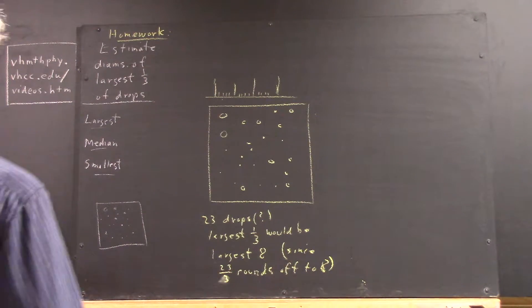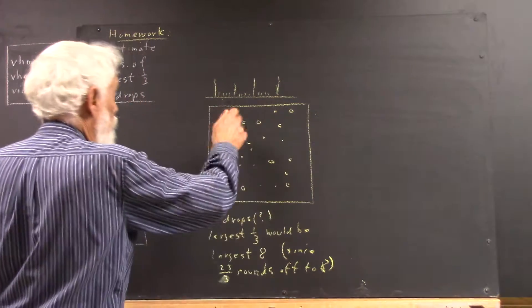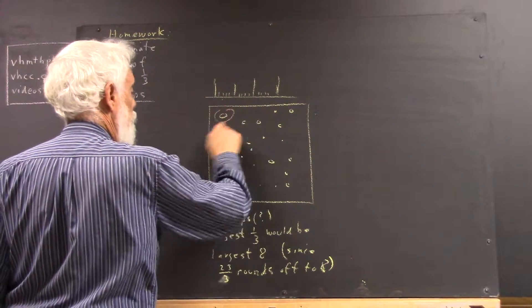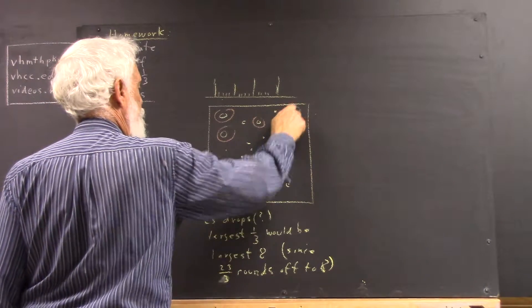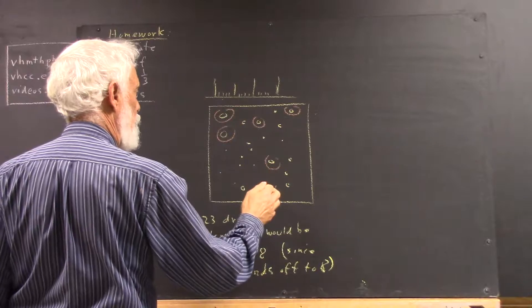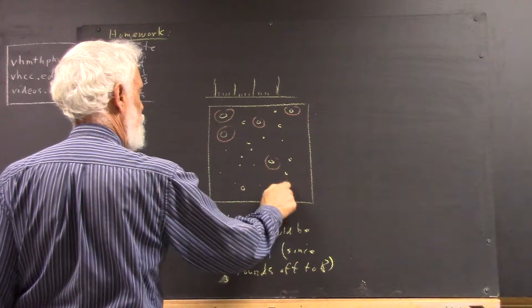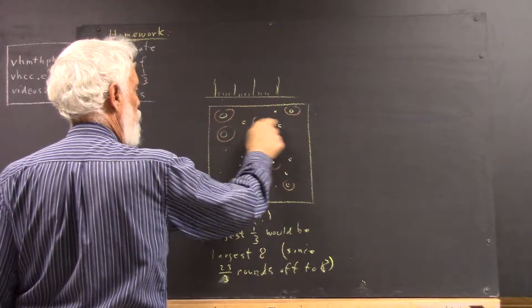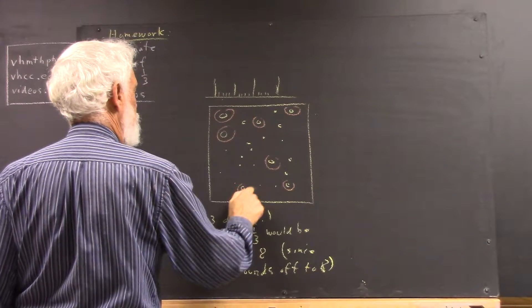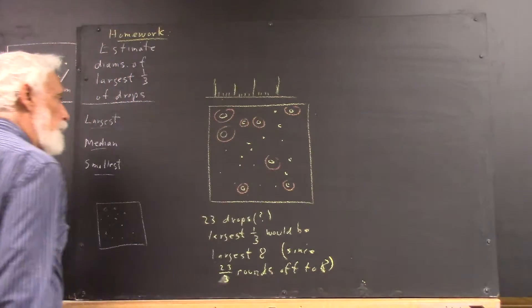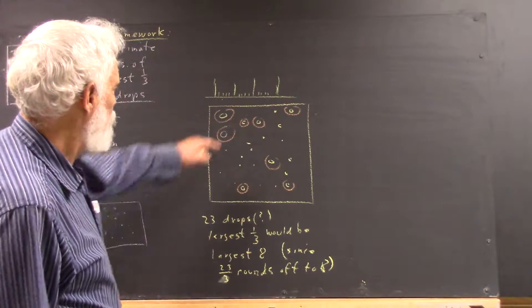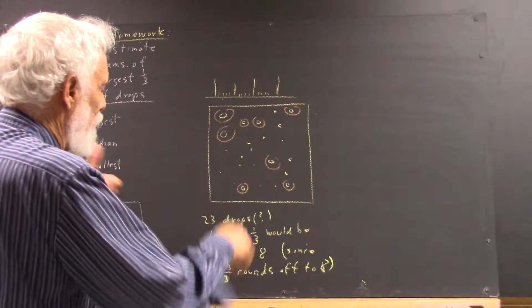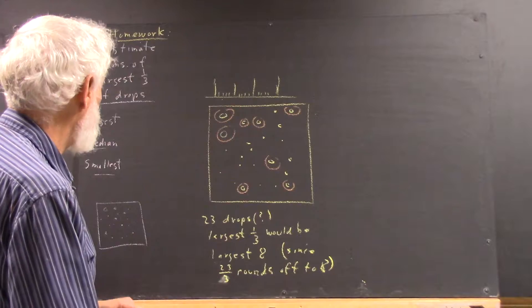Well, I'm going to circle what I think are the eight largest drops and then try to estimate. Clearly, there's five and probably six. These look just about the same, but this is bigger. So I'll just pick one of these and we'll have to leave one of them off. Now, that looks just a little bigger to me.